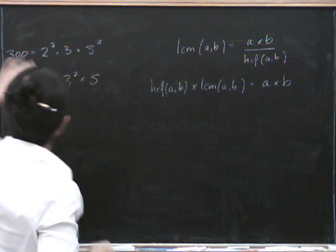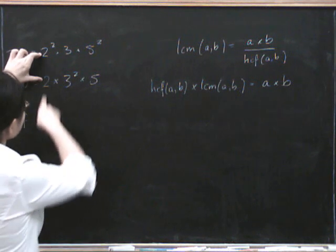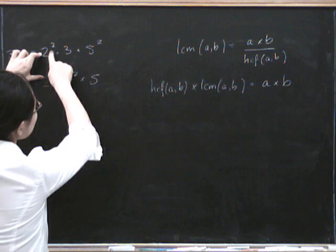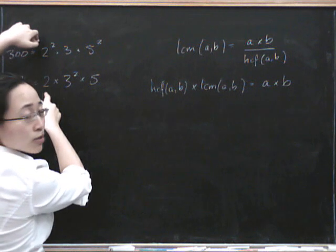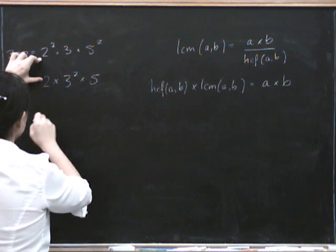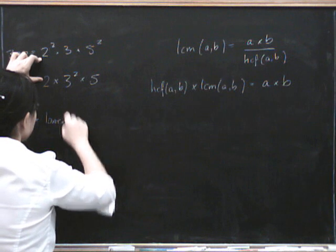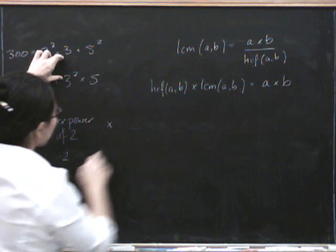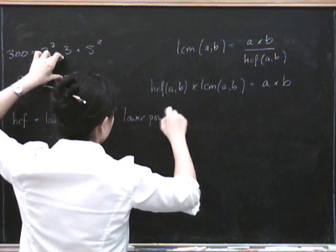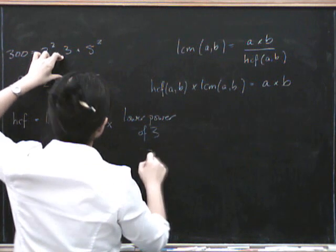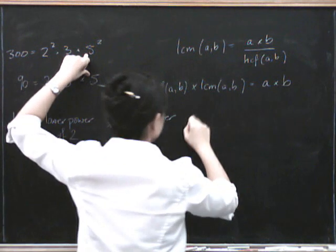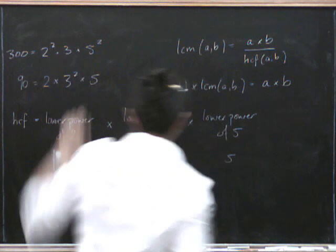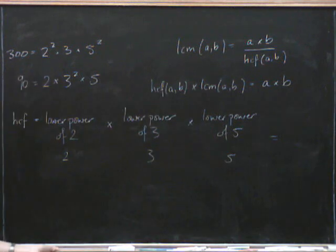To find the highest common factor, we take the lower power of each prime. The lower power of 2 is just 2. The lower power of 3 is just 3. And the lower power of 5 is just 5. Because whichever is the lower power is the one that both numbers possess — taking the higher power would exceed what one of them has. So the highest common factor is 2 times 3 times 5, which is 30.